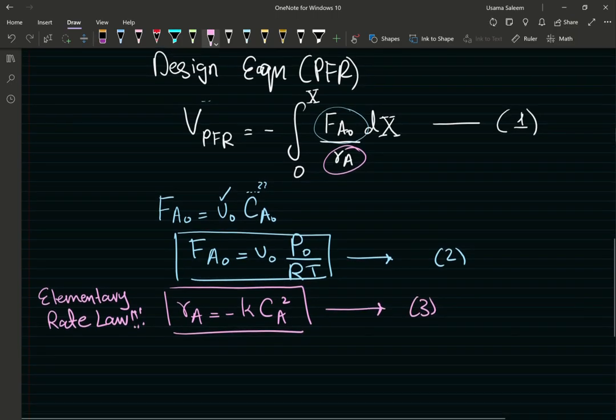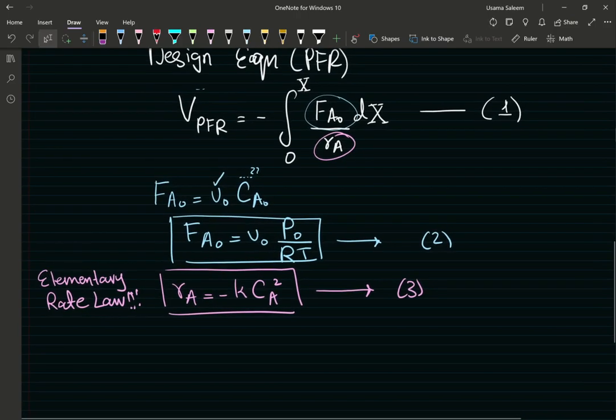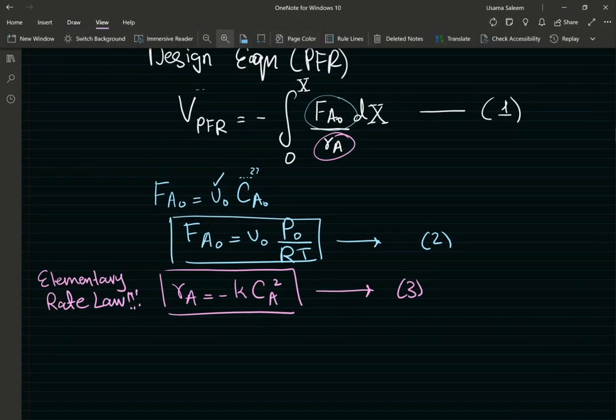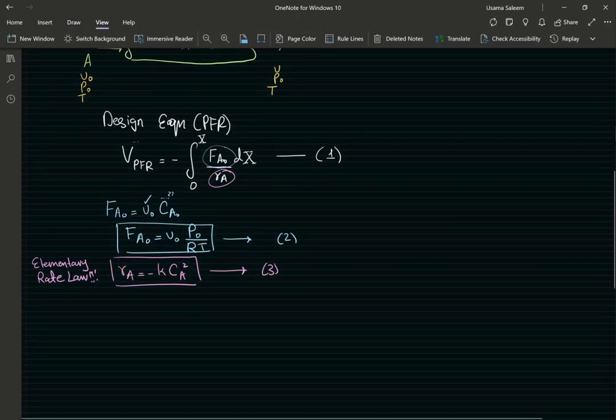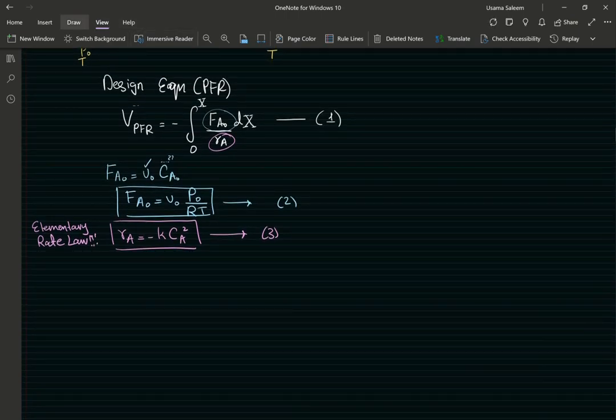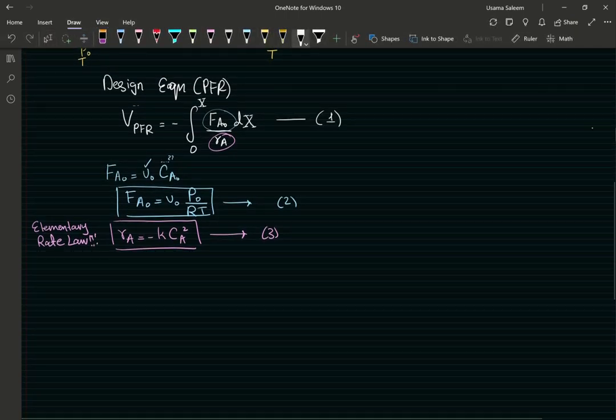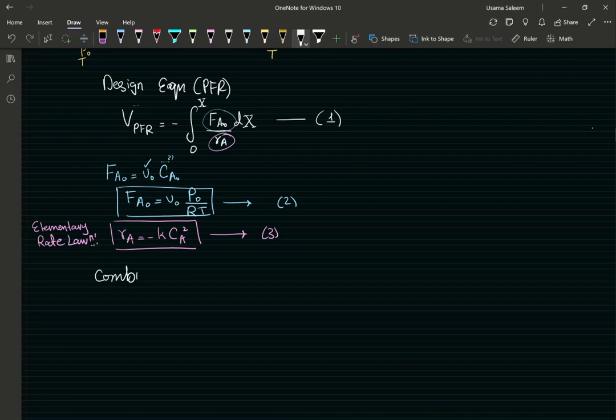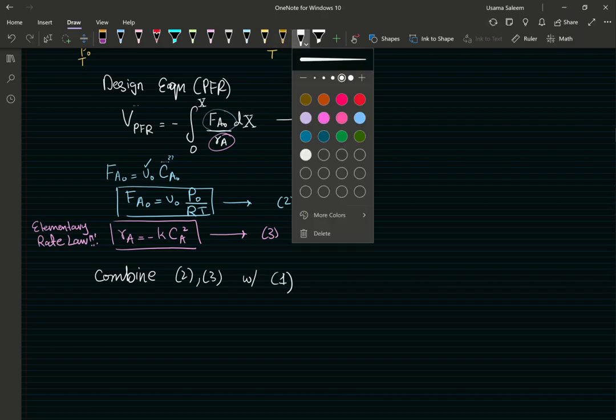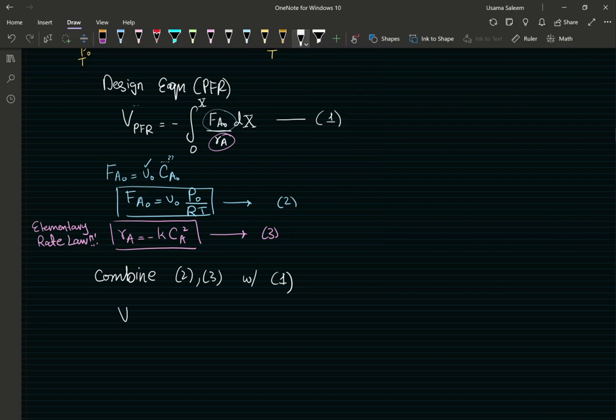This is going to be my equation 3. So let's combine 2, 3 with 1. Let's zoom out a bit so we can see all of my equations. Now, at this point, I'm going to combine, we're going to combine 2, 3 with 1. Good.